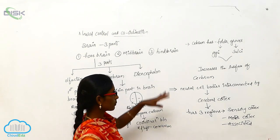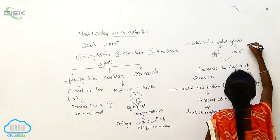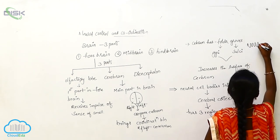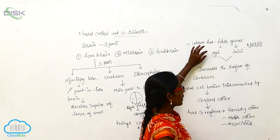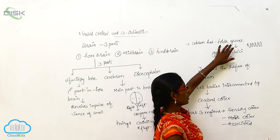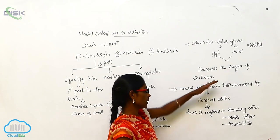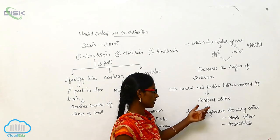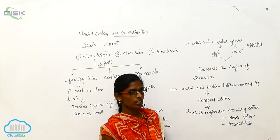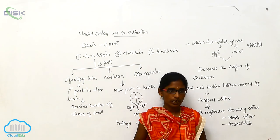The cerebrum has folds and grooves. The folds are called gyri and the grooves are called sulci. The gyri and sulci increase the surface of the cerebrum. The neural cell bodies are interconnected by the cerebral cortex, which has three regions: the sensory cortex, motor cortex, and associated cortex.